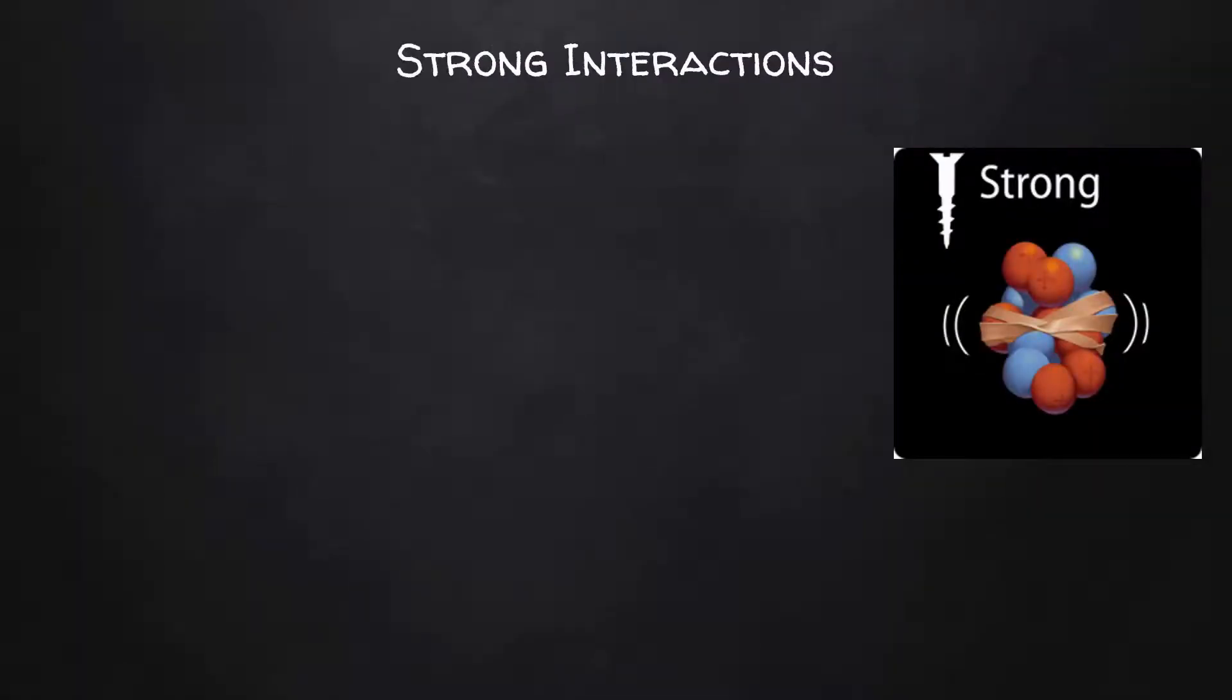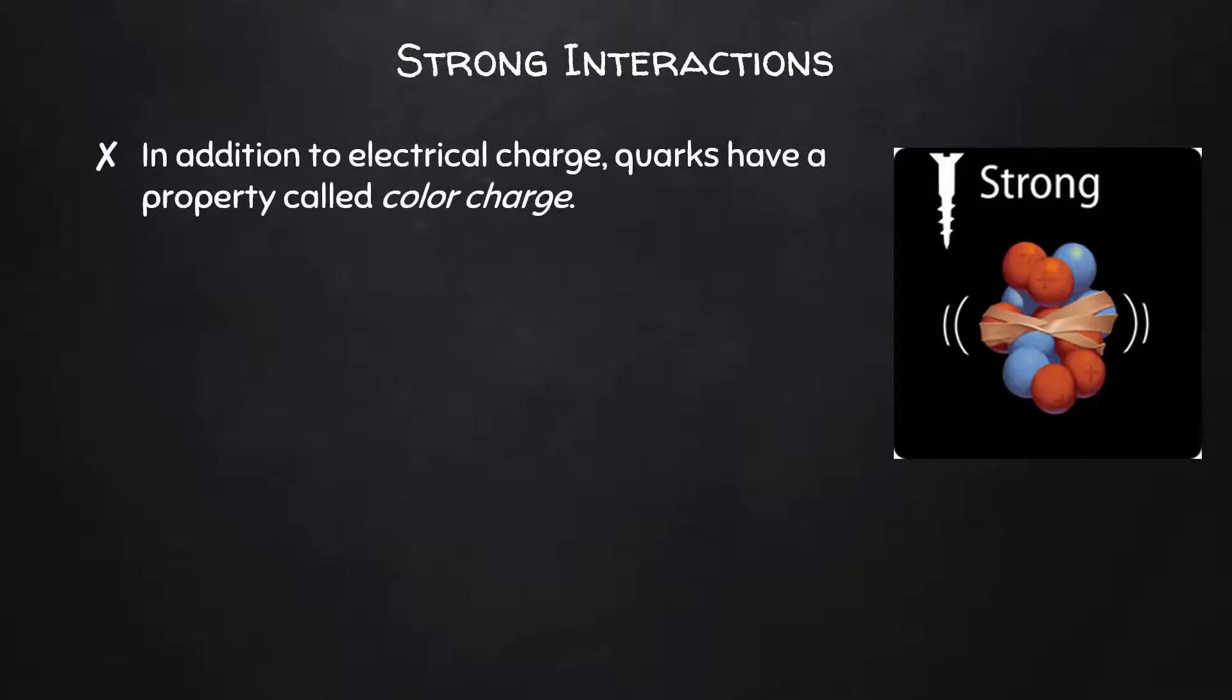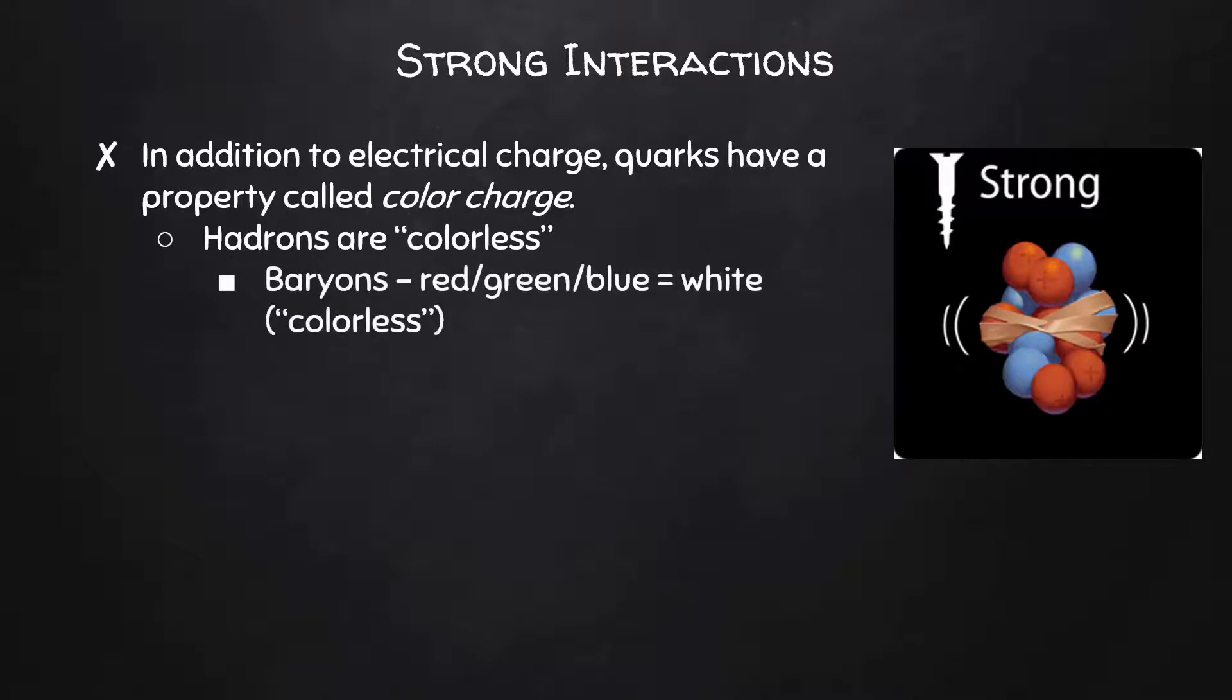Now let's talk about strong interactions and how they can be represented by Feynman diagrams. Particles interact via the electromagnetic force because of their electrical charge. Well, in addition to electrical charge, quarks have a property called color charge, and this is involved in their interaction via the strong force. Hadrons are considered colorless. Baryons, which are three quarks or three antiquarks, are made up of one of each of the primary colors: red, green, and blue. When we combine those, we get white light. That represents a colorless baryon. Mesons are made up of quarks, one having a color and the other having its anti-color. So a red anti-red is colorless. A blue anti-blue is colorless, and so on.